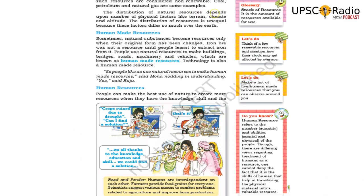The distribution of natural resources depends upon physical factors like terrain, climate, and altitude. The distribution of resources is unequal because these factors differ across the terrain. Resources form over time — coal takes lakhs of years, while solar energy reproduces in milliseconds. Different climates and terrains affect the types of resources found in a region.